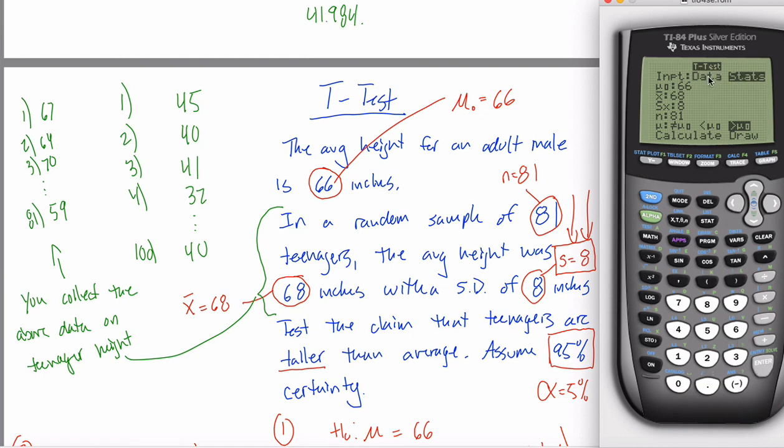And then stat, tests, t-test, and just tell you have the data instead of the statistics. When I switch this from statistics to data, it'll be like, oh, you don't have the statistics. Well, then I'm not going to bother asking you x bar, s, and n. All right, watch those three disappear. It still needs to know mu naught. It still needs to know this baseline average that we're comparing it against. But that's still given. That's still 66. All you'd have to do is tell what list your data was in and then what your claim is. And then you could calculate or draw and you could be done with this problem.